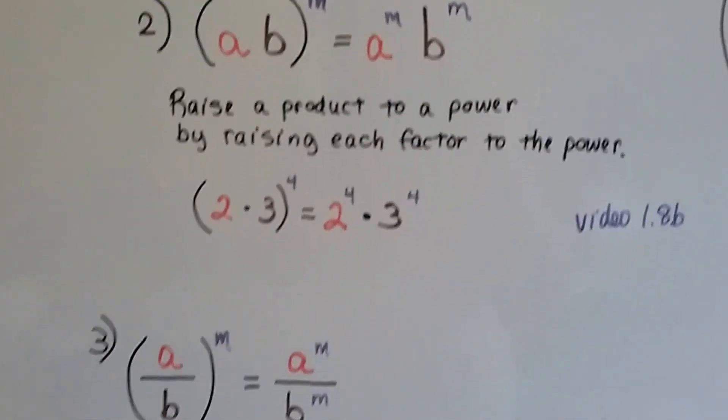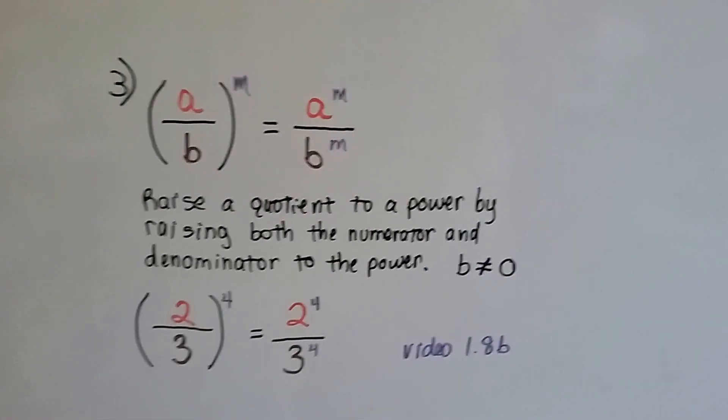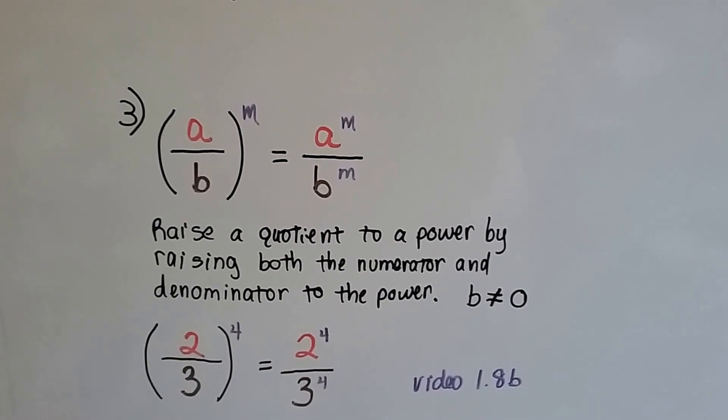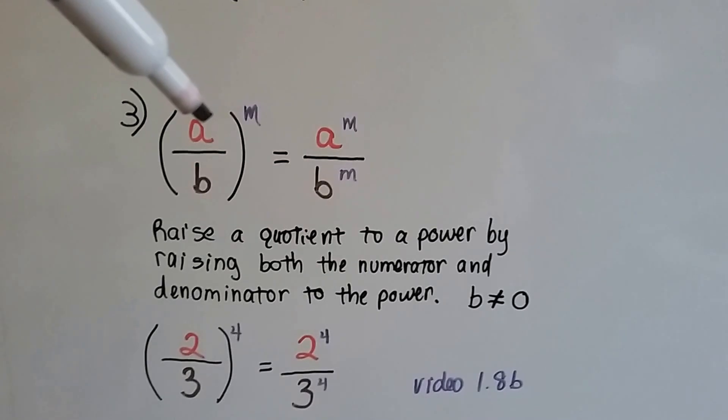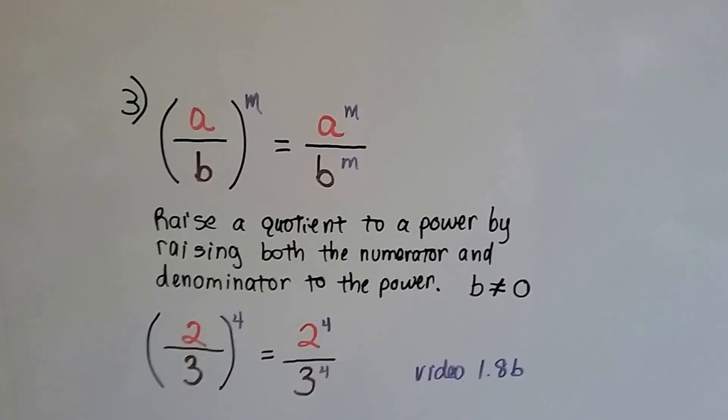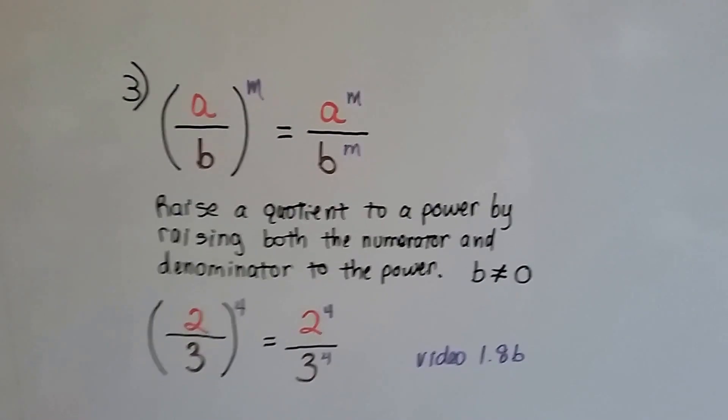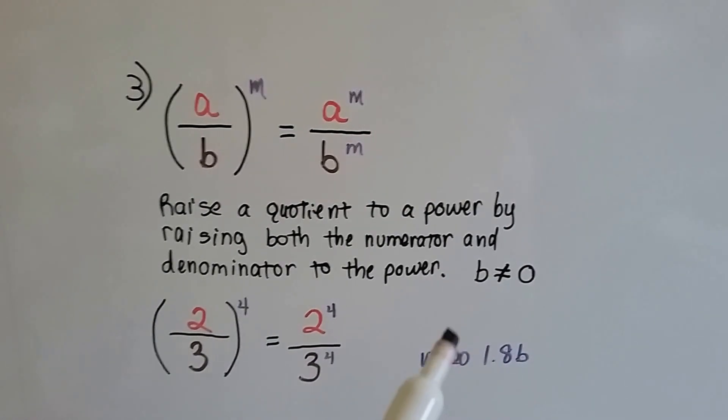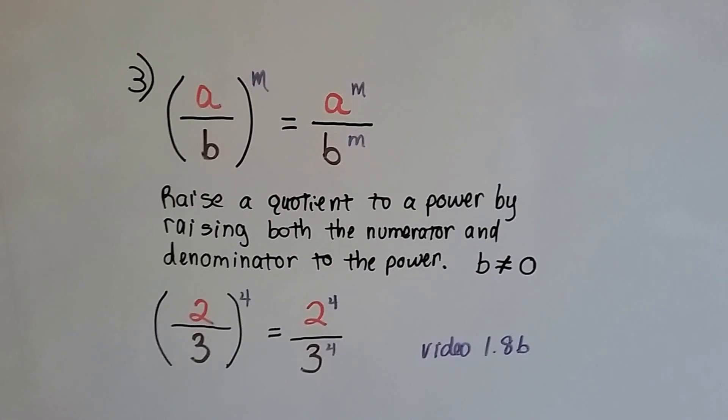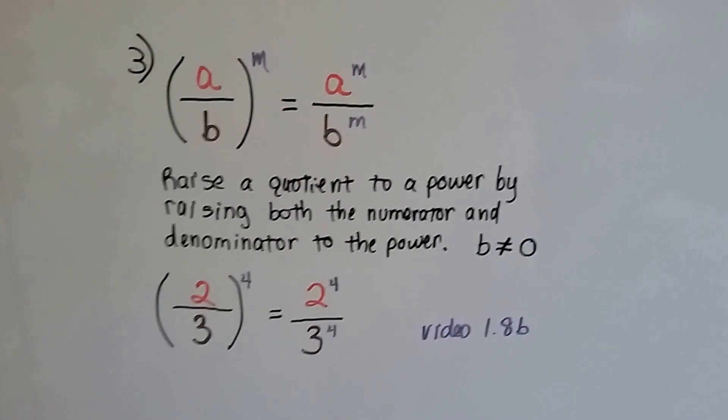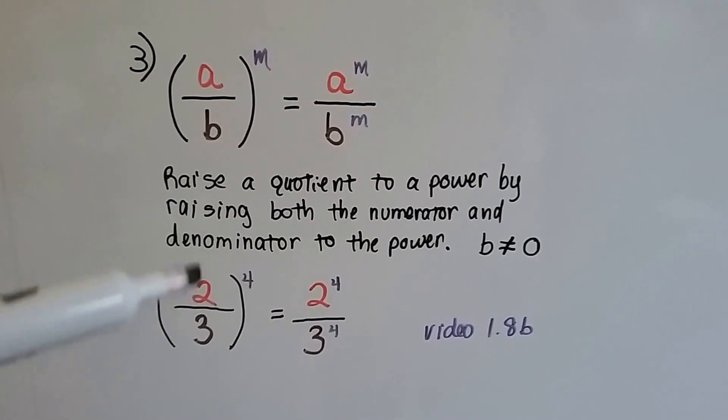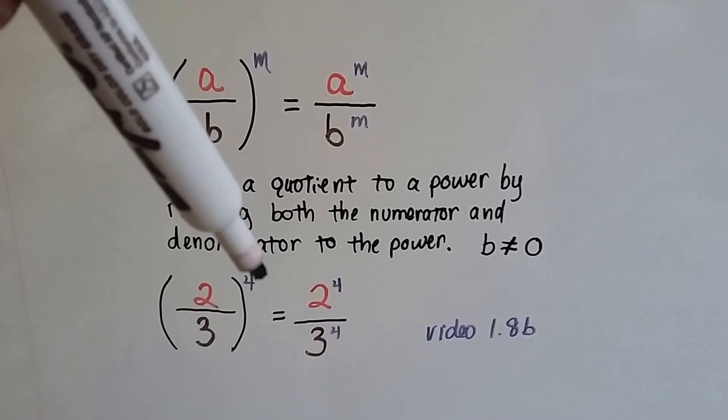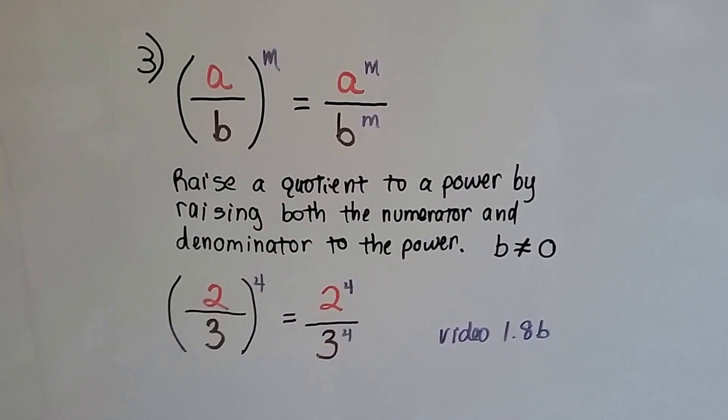Video 1.8b also. And then here's the last power rule. If we've got a fraction inside a parentheses and an exponent on the outside, we distribute this exponent to both the numerator and denominator. You raise a quotient to a power by raising both the numerator and the denominator to the power, as long as it's not a zero denominator because then it would be undefined. So if we had 2 thirds inside a parentheses and it was being raised to an exponent of 4, we would give that exponent to the numerator and the denominator.